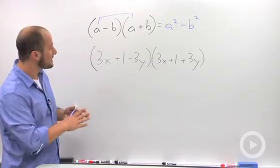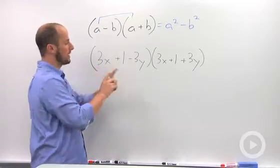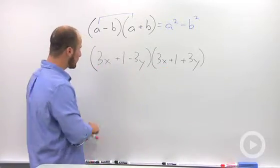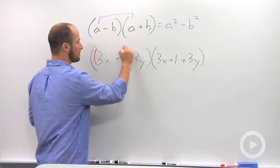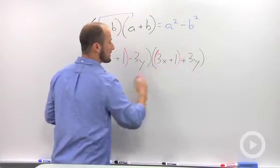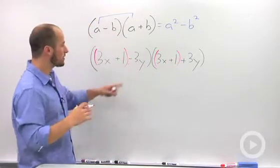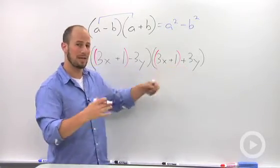So, what I see is there's a 3x plus 1 and a 3x plus 1 in both. So, I'm going to sort of group those off to the side and sort of distinguish them for the rest of the problem. We also then have a minus 3y and a plus 3y.